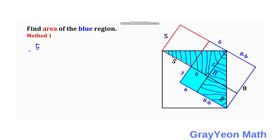For the first triangle we have 5 over 5 plus b — this shorter leg over this longer leg, 5 plus b, for the first triangle. For the second triangle, it is equal to the ratio of this other triangle, and the same corresponding length: we have 8 minus b over the longer leg of the second triangle.